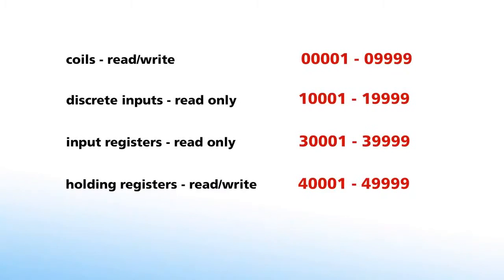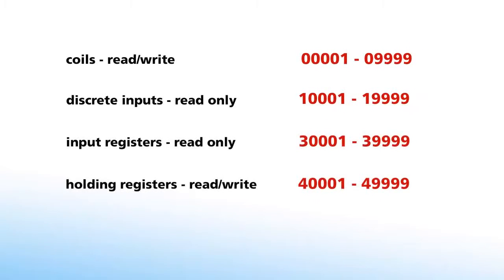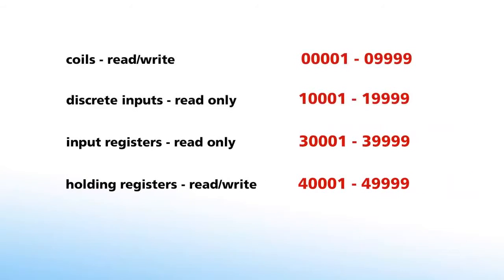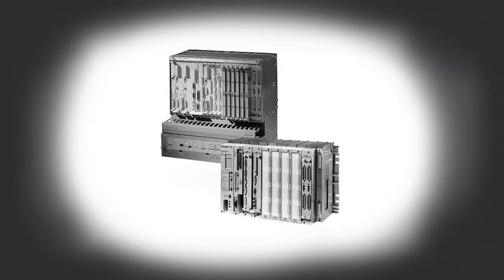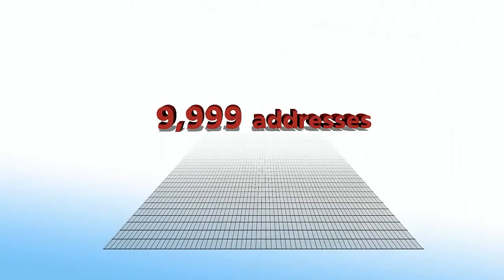Now let's talk about Modbus's eccentric addressing system and the different data tables. There are four tables where information is stored. Two tables store simple discrete values called coils, and two store numerical 16-bit values known as registers. For each type of data, there is one read-only table and one read-write table. There are no tables for 32-bit data types because back when Modbus was defined, double integers and floating point values were not available in PLCs. There is a way to use those data types though, and we'll get to that in a moment. Each table has a maximum of 9,999 addresses.